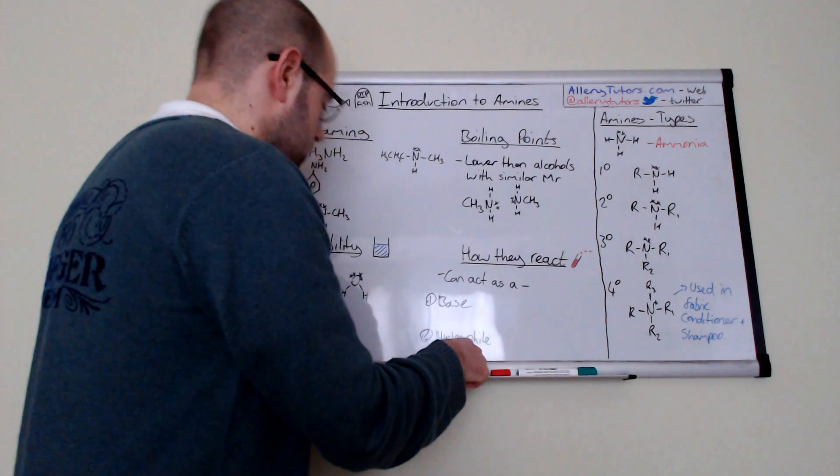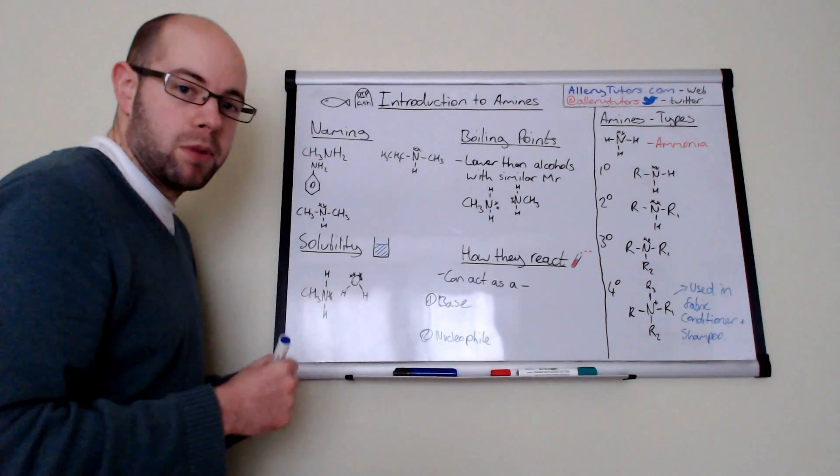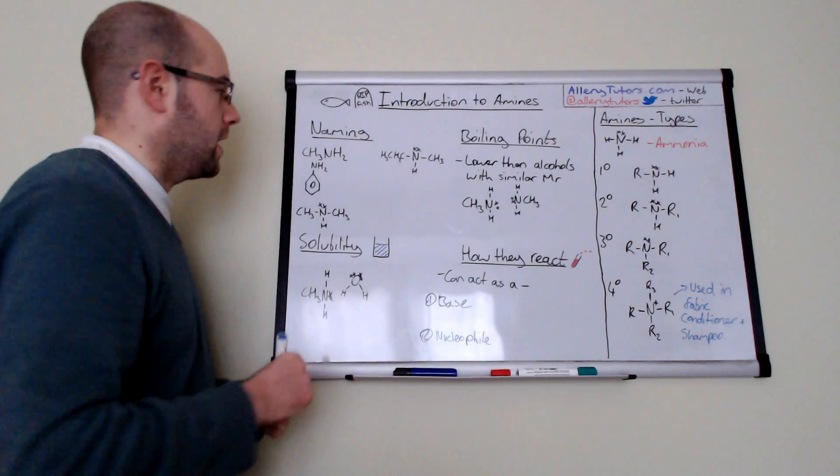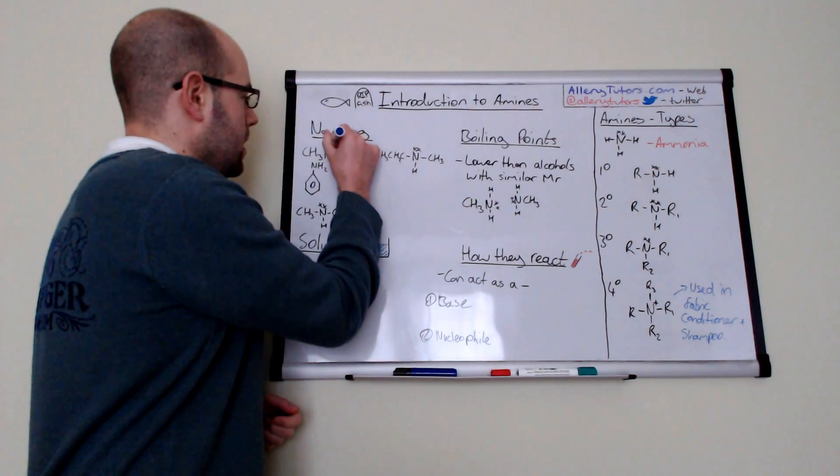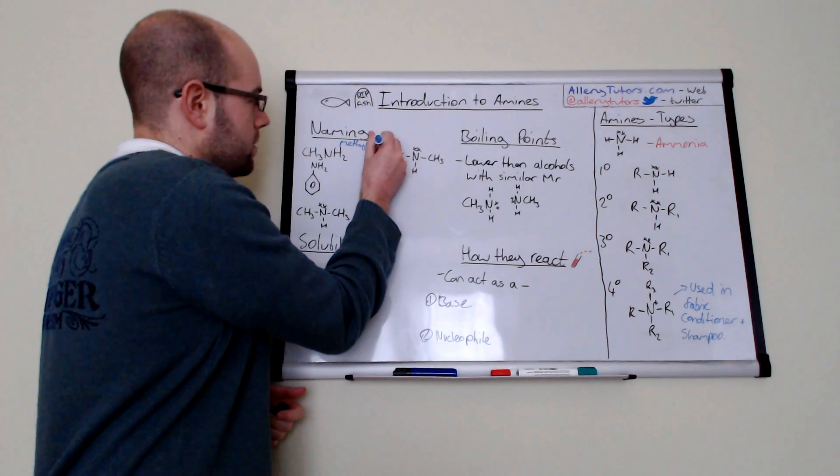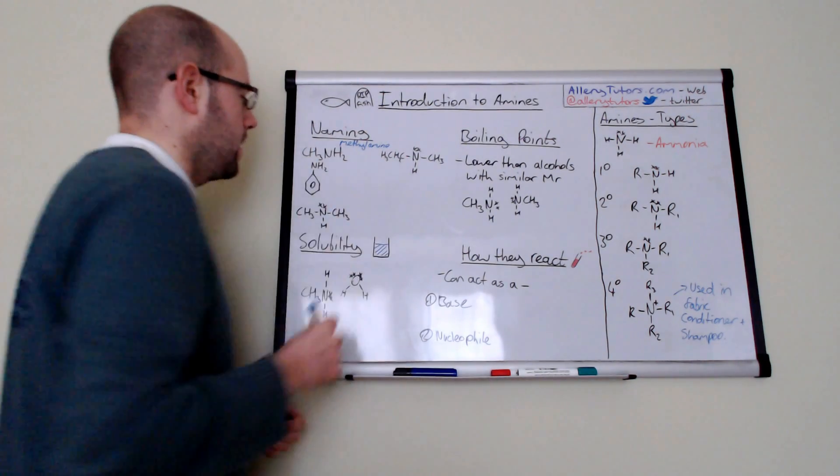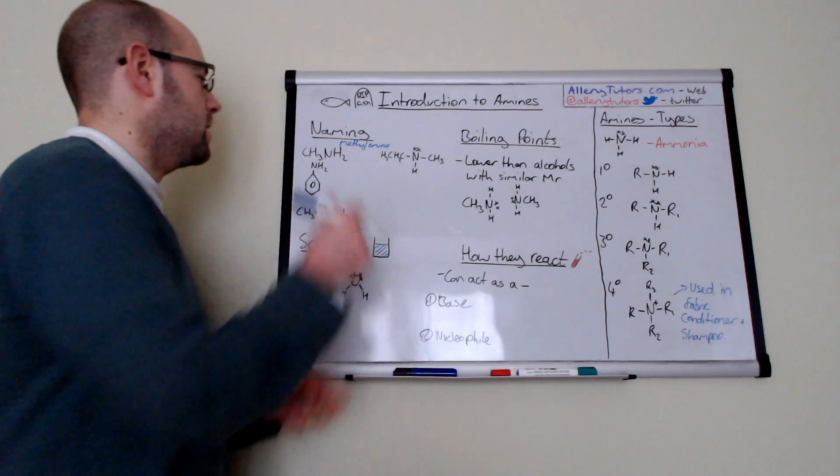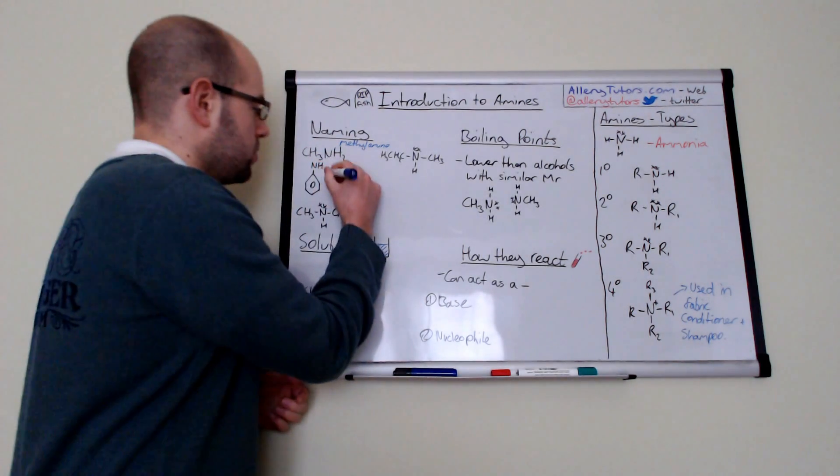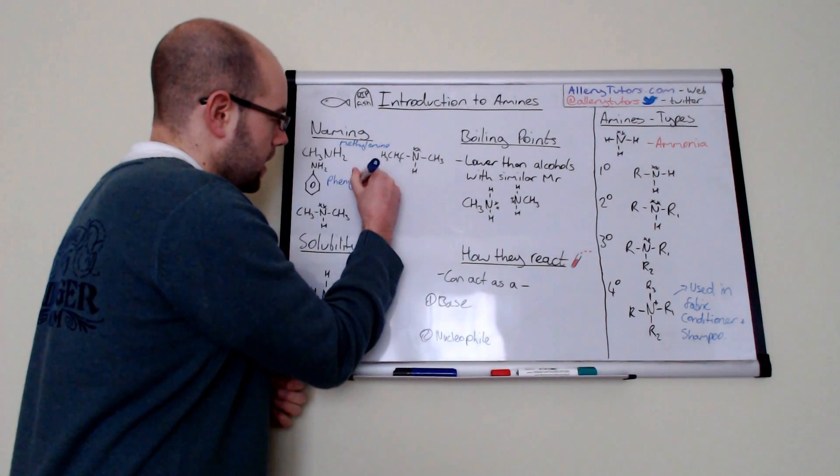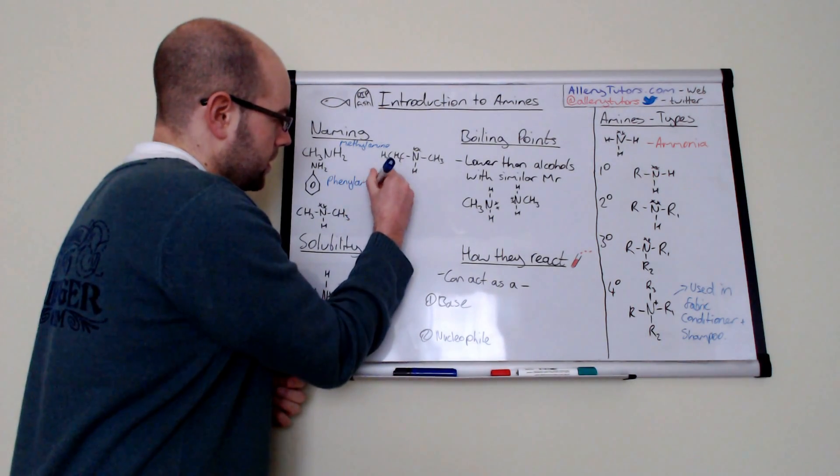So this first one at the top here I'll write it in blue and this one is methyl and we've got an NH2 group at the end. So we call that one methyl amine. So you literally just put the word amine on the end. Really really easy. Okay this one we've got a benzene ring and we've got an NH2 and this is one of the exceptions where we call it phenyl instead. So we call that phenyl amine. We just put amine on the end.